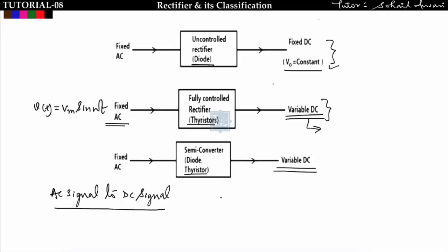In all three categories we use diodes and thyristors, which are power electronic devices with very low loss. Ideally we take loss as zero, so in a power electronic circuit we assume input power equals output power.